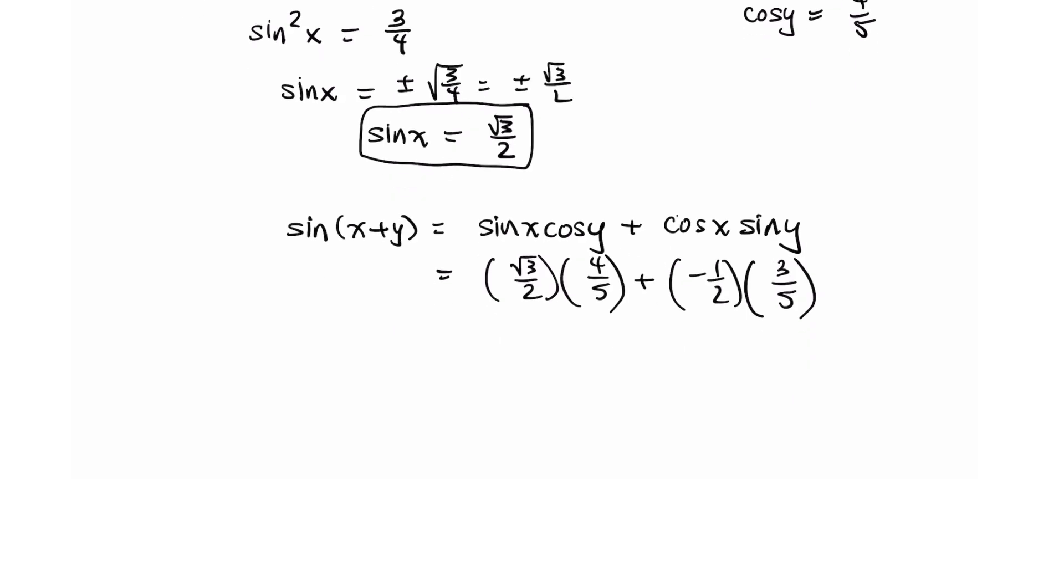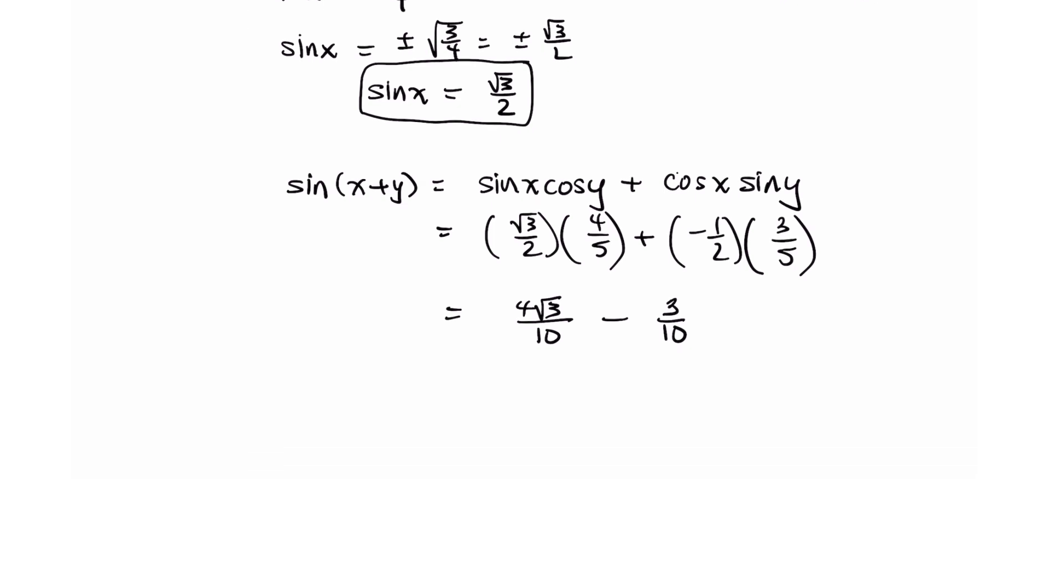And now we simplify. So this is four square root three divided by ten minus three over ten. Notice I'm not reducing that first fraction to lowest terms because I want to keep the same denominator so that it is easier to combine the fractions. So you have four square root three minus three all over ten. And that is the value of sine of x plus y.